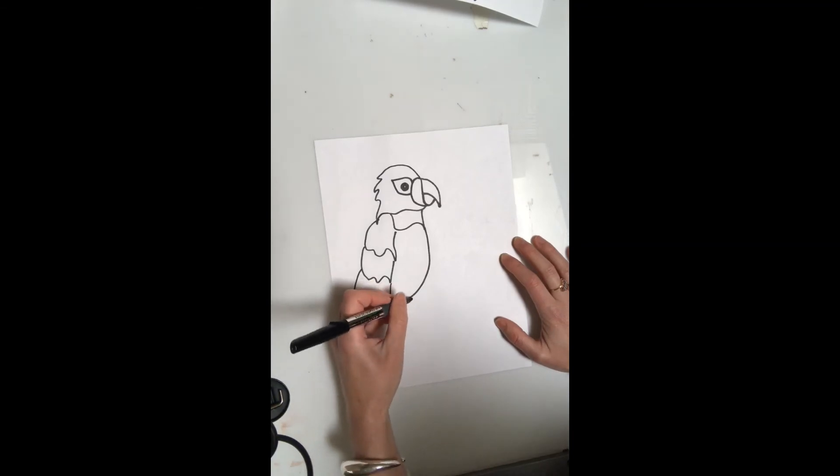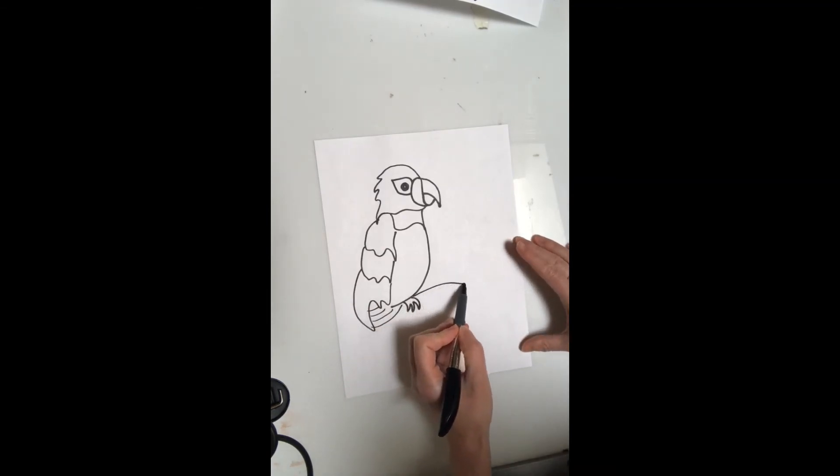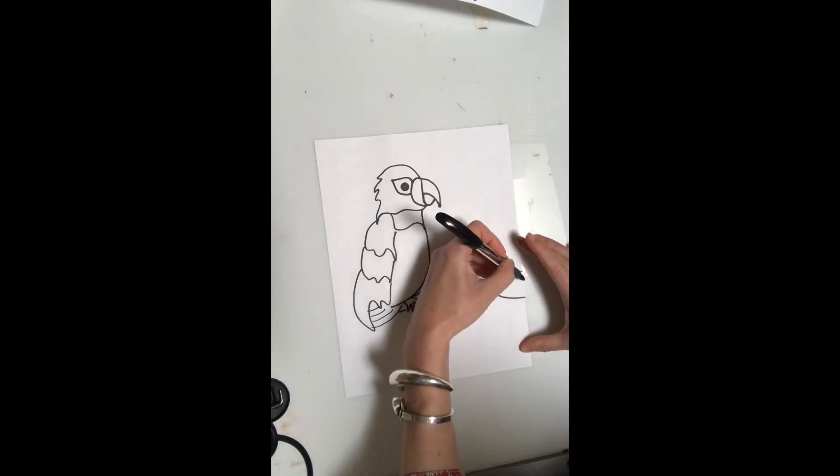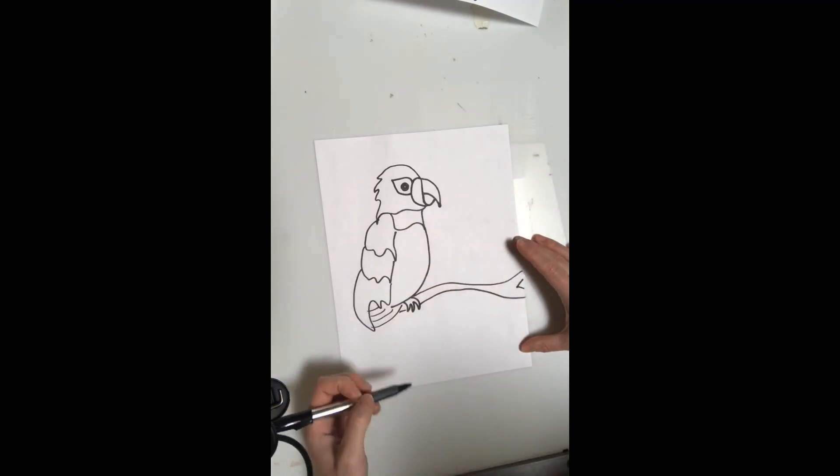I'm going to make a little claw here so he or she can grab onto a branch. I'll have that curving right off the page and then I'm going to go ahead and draw a tail feather.